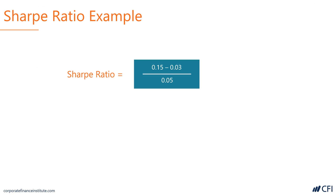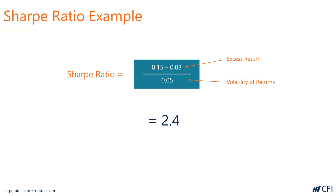Here's an example. Imagine an investment with an expected return of 15% and the risk-free rate is currently 3%. This company has a 12% expected excess return. It also has fairly low volatility of returns, which is a standard deviation of 5%. The Sharpe Ratio for this investment is 2.4.